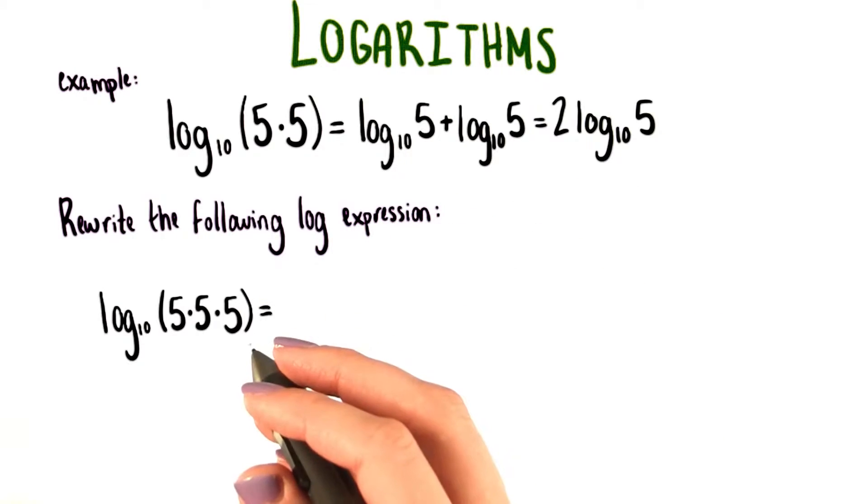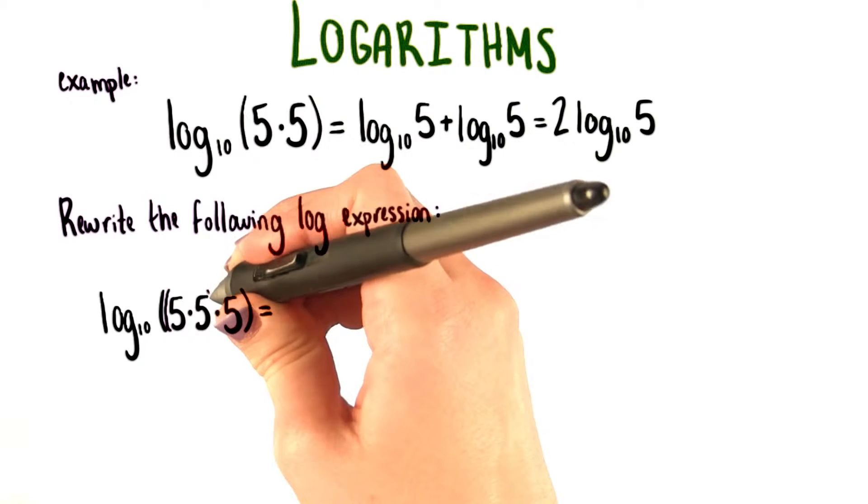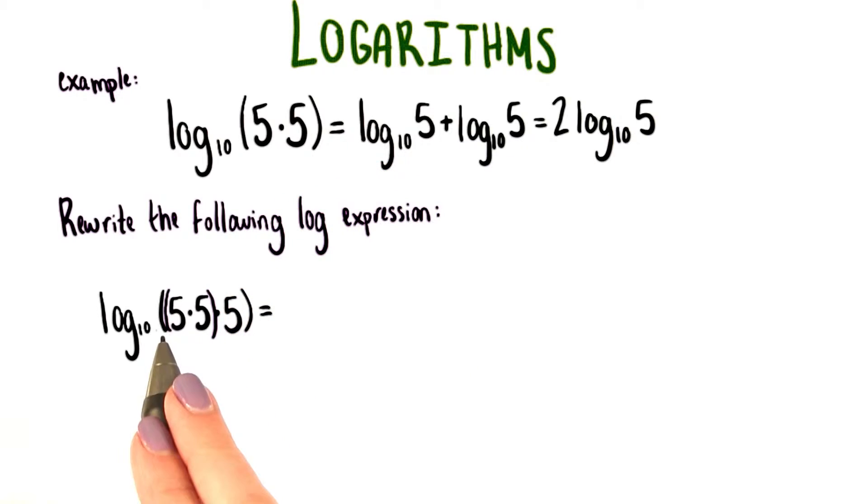One thing we can do to simplify this expression is to start out by inserting one new set of parentheses around this first 5 times 5. That way, just like we've done before, we're multiplying two things together.